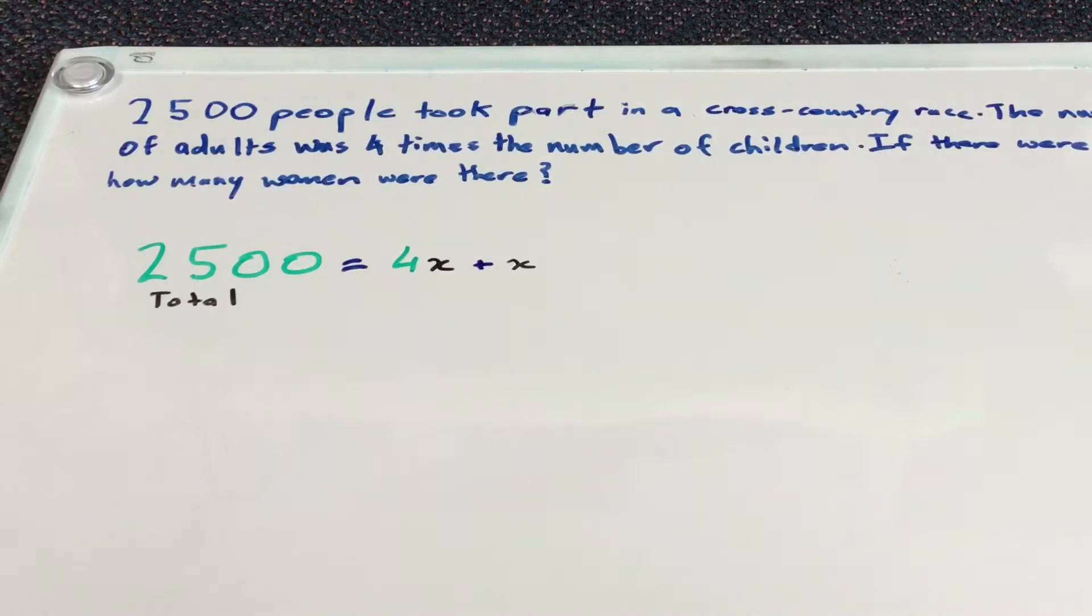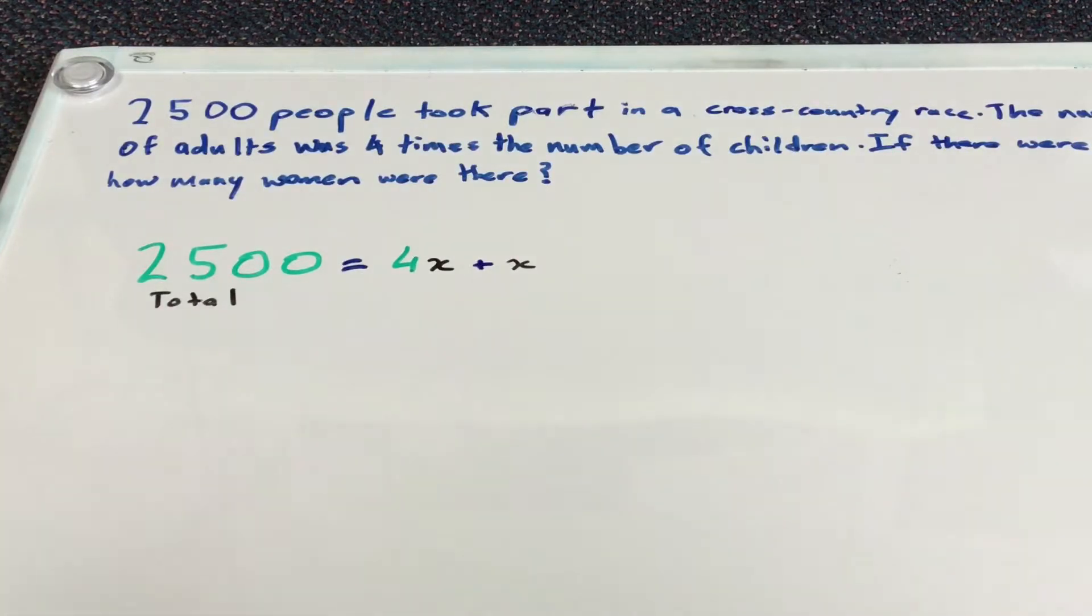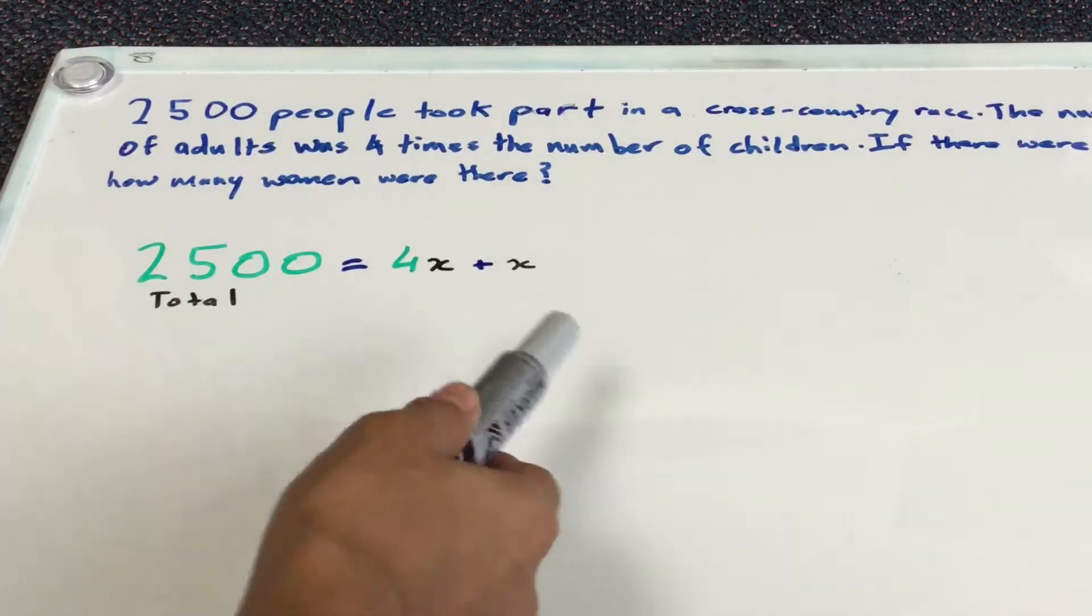So the first thing I did was write it into an equation. Straight away, the first thing you need to write down is the total, which is 2,500. And we know that the number of adults is four times the number of children, so we can write it as 4x, and children can be written as x.